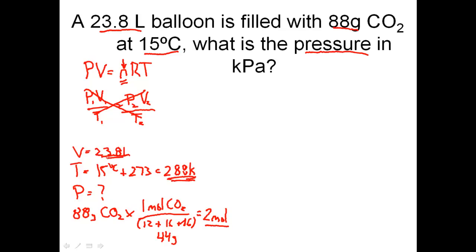We have 2 moles of CO2, temperature of 288 Kelvin, volume of 23.8 liters. What is my pressure in kilopascals? Let's plug this into PV equals NRT. The pressure is what we're solving for. The volume was 23.8 liters, which needs to be in liters. The N is 2 moles. The R is the ideal gas constant. Any time I use kPa, I choose the R value of 8.31. The temperature in Kelvin was 288.